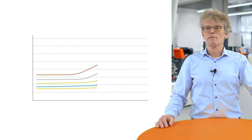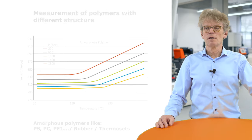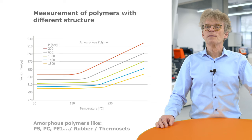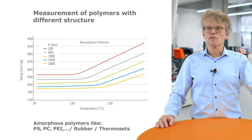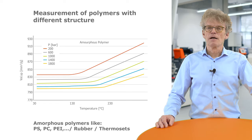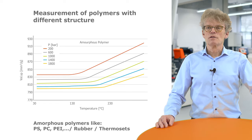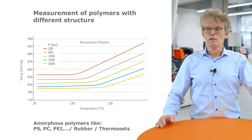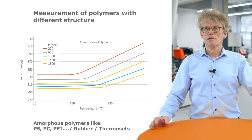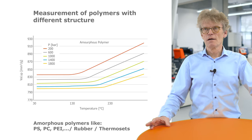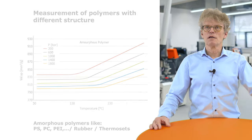On the other side, the amorphous polymers like polystyrene, polycarbonate, and polyethylene — we have just a transition between melt and solid phase. Both the solid and the melt phase show linear behavior, and in between we just have a change of the slope of the isobars.